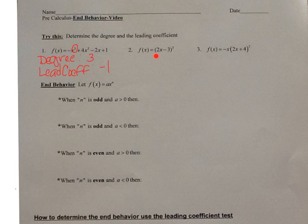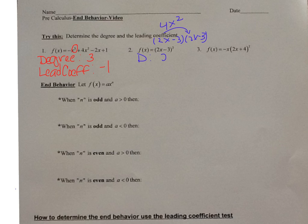For number 2, f(x) = (2x - 3)². This is actually (2x - 3)(2x - 3), and when we distribute, I'm going to get 4x². So my degree is going to be 2, and my leading coefficient is going to be positive 4.